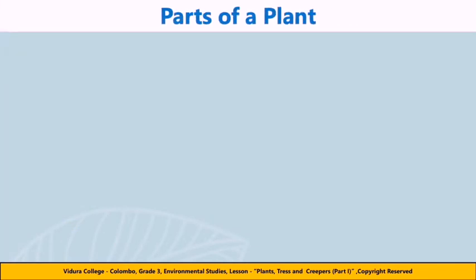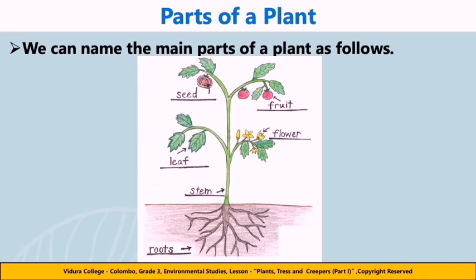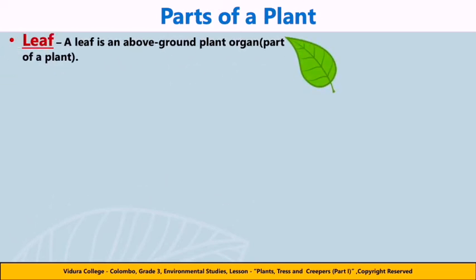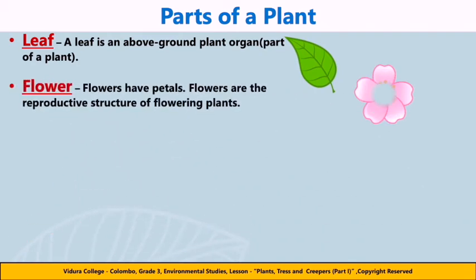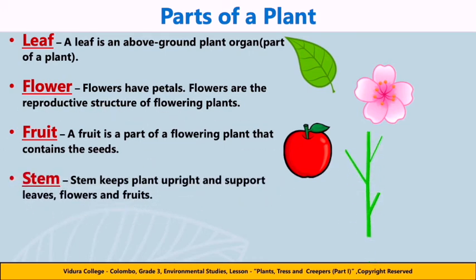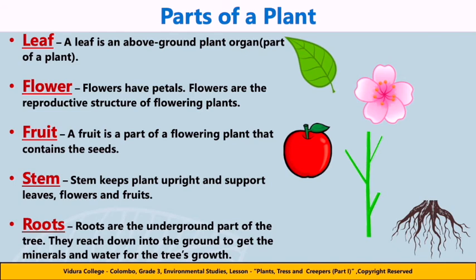Now we are going to learn about another interesting topic — parts of a plant. As you can see in this picture, we can name the parts of a plant: seed, fruit, leaf, flower, stem and roots. A leaf is an above-ground plant organ. Flowers are the reproductive structure of flowering plants and have petals. A fruit is the seed-bearing structure in flowering plants. The stem keeps the leaves in the light and provides a place for the plant to keep its flowers and fruits. Roots help a plant absorb water and minerals from the soil for the plant's growth.